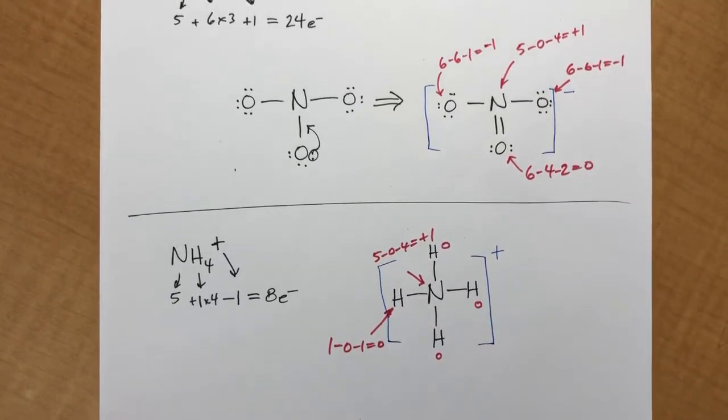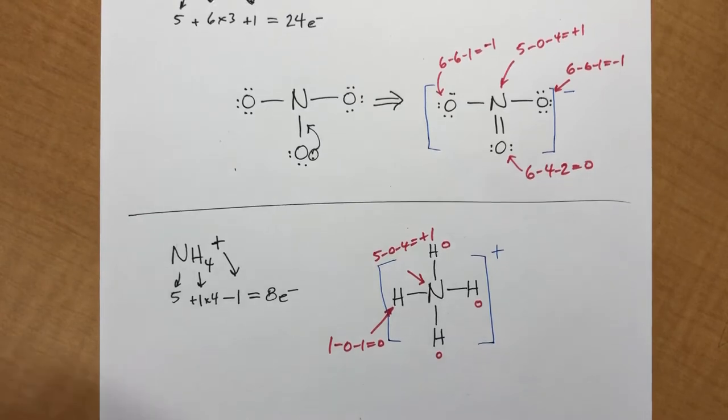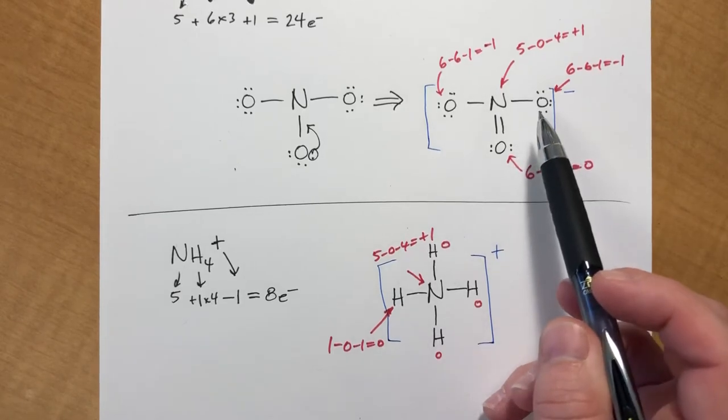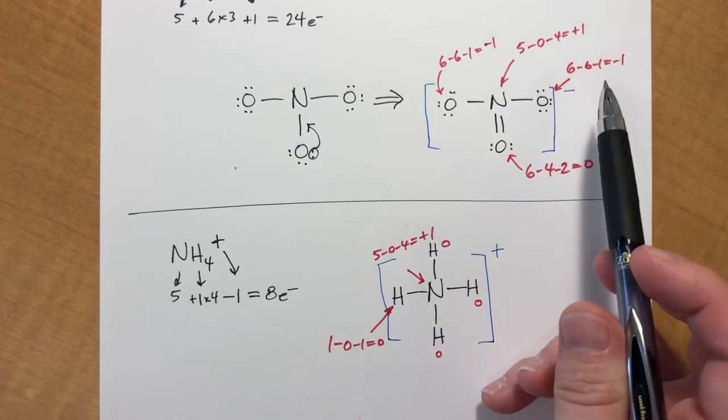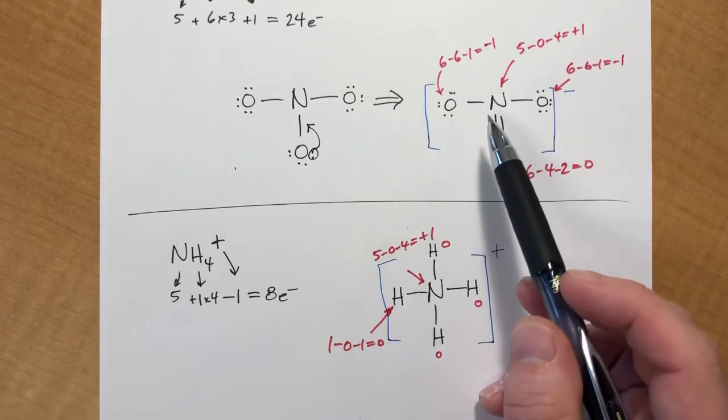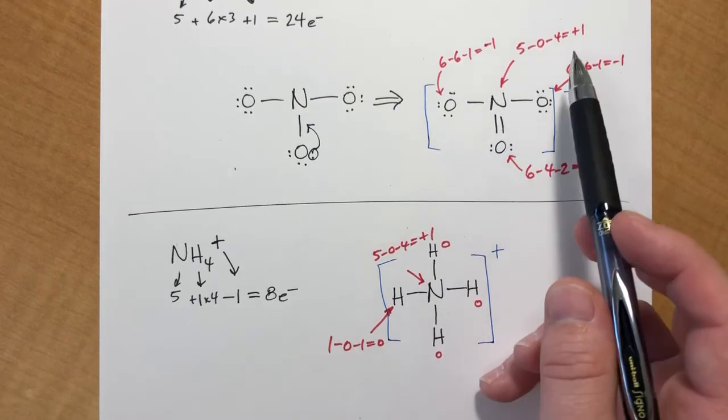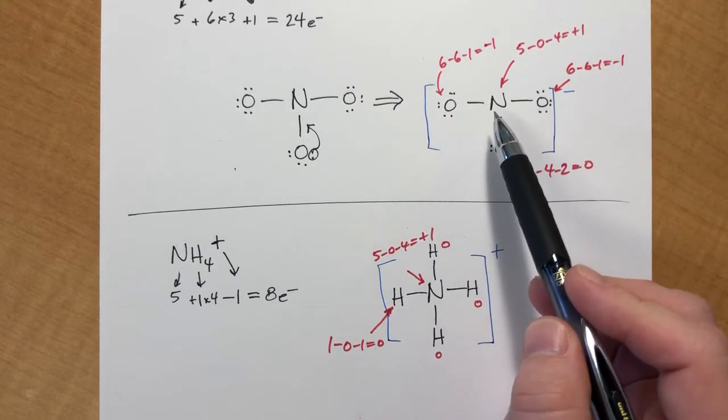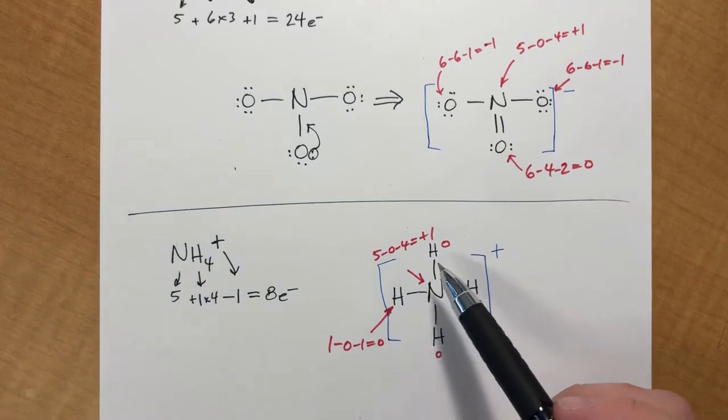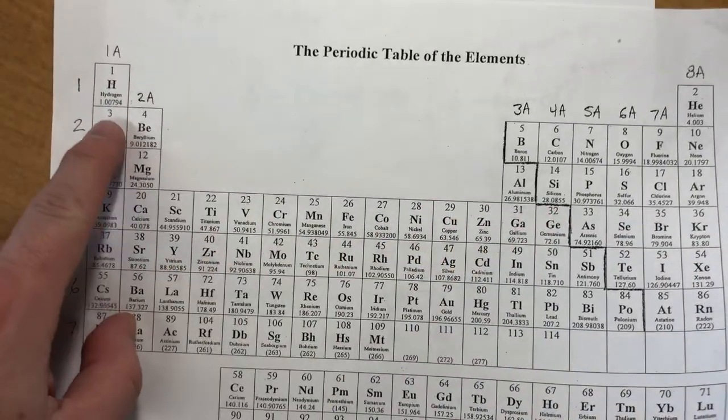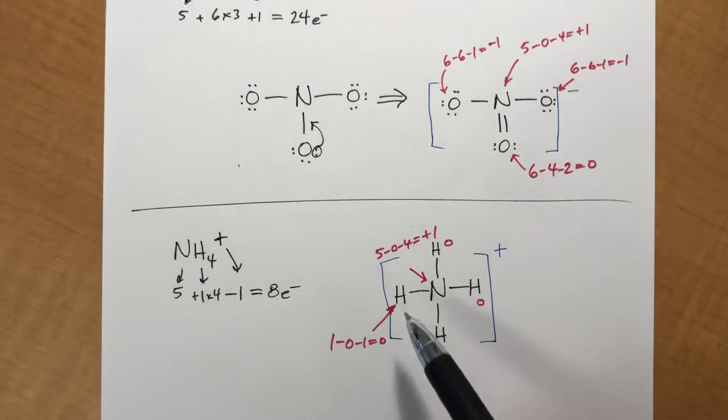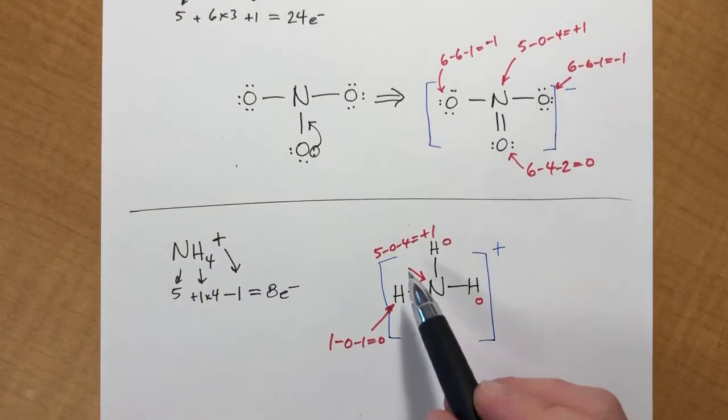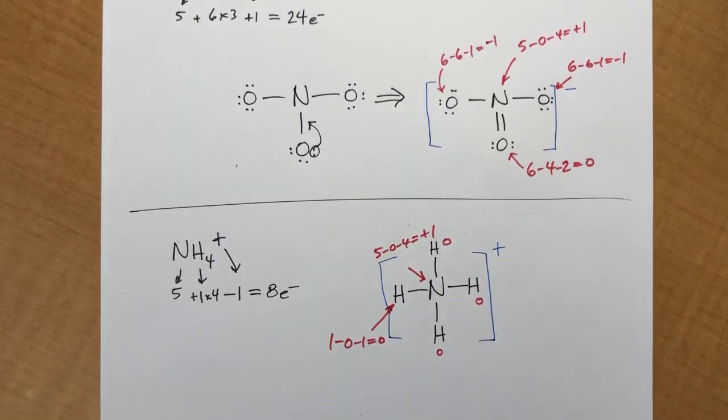One thing that I guess I didn't explicitly say in the last video about formal charges is that if you have a choice to make about where to put charges, the more electronegative atoms would like to be negative, are more likely to tolerate being negative, and the electropositive ones are more likely to be positive. On this, the oxygens are more electronegative and they have negative charges, and the nitrogen's got a positive charge. Hydrogen is more electropositive, but it can't form charges. If it's got one bond, it's happy. But we have an electropositive atom. The central atom is the one that has the positive charge. So that makes sense.